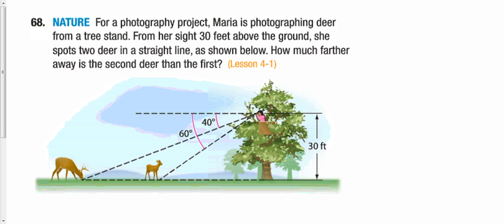Maria is photographing deer from a tree stand, 30 feet above the ground, and she spots two deer. We want to find the distance between them. We'll use trig ratios — she has angles of depression down to the two deer, so we're going to make a couple of triangles.